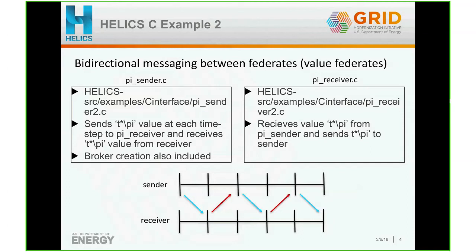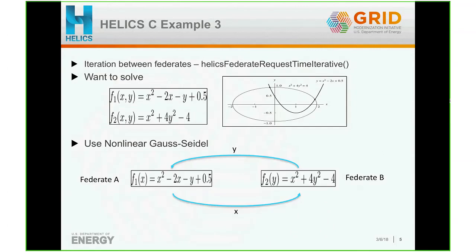The third example uses the Helix iterative mode, which allows sending and receiving messages at the same time step. The function for this is called helix_federate_request_time_iterative, instead of helix_federate_request_time. In this example, there is a nonlinear system to be solved: two equations, F1 and F2, representing an ellipse and a parabola. They intersect at two points, and depending on your initial starting point, you converge to one of the solutions.